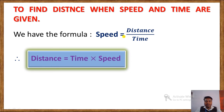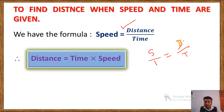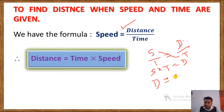We know the formula: speed equals distance divided by time. Using this formula we can find the formula for distance. Writing speed over 1 equals distance over time, we do cross multiplication: S into T equals D into 1, so D equals S into T. This is the formula: distance equals speed into time.